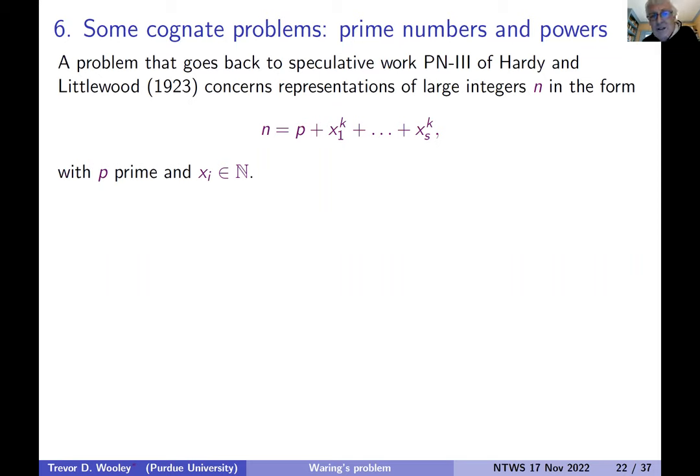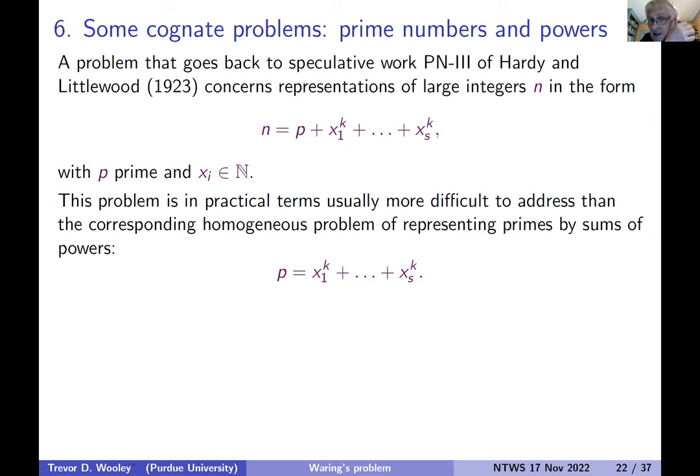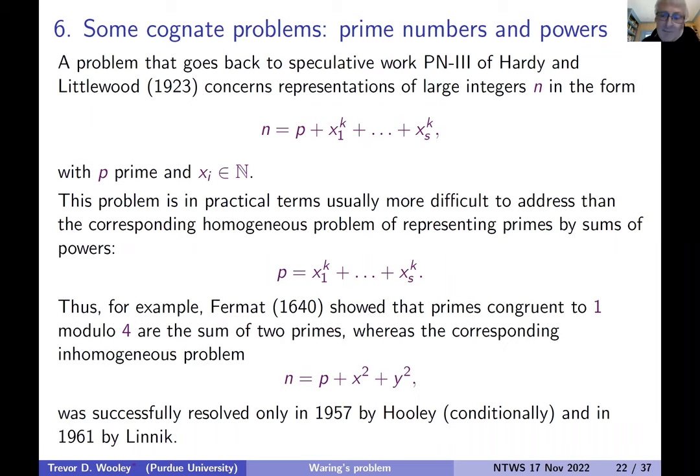So you could look at a prime plus a number of k powers. And this is something that Hardy and Littlewood looked at a century ago. They had all kinds of conjectures about problems involving primes and k powers. And it's worth highlighting here that this is kind of an analogue of a Goldbach type problem in some sense. So Fermat, and probably this was known to people before Fermat, at least three centuries ago, it was known that primes congruent to one mod four are the sum of two squares.